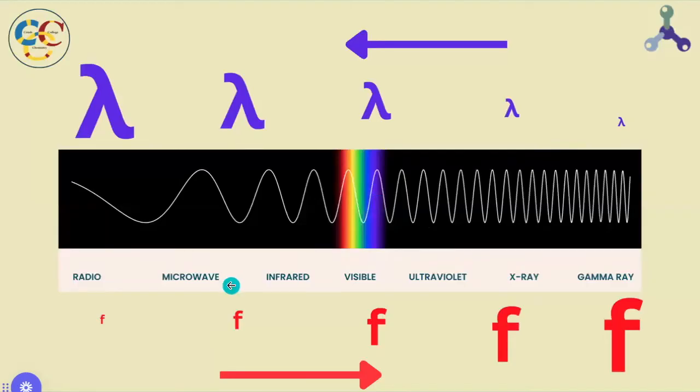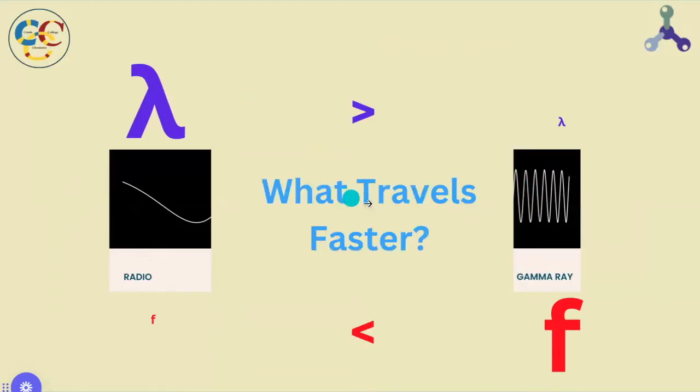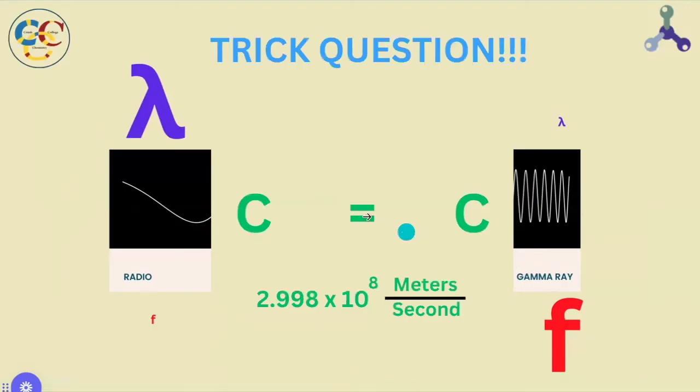frequency increases left to right. To ensure we understand how this works, let me ask you, what travels faster, radio waves or gamma waves? So comparing these two terms, radio waves has a larger wavelength, but gamma radiation has a greater frequency. However, this is a trick question because they are the same speed.